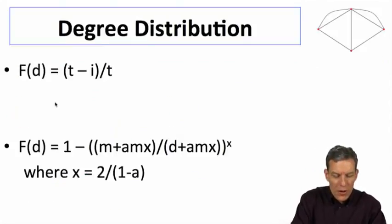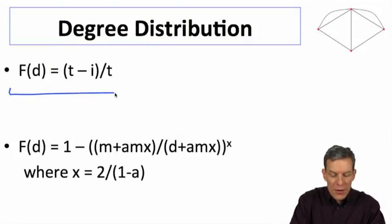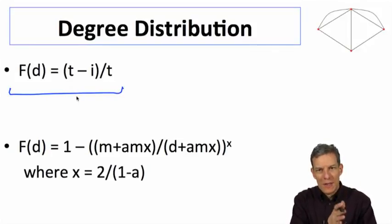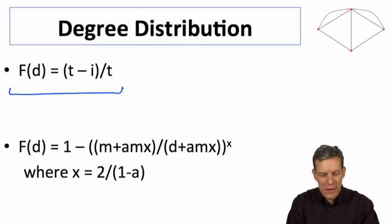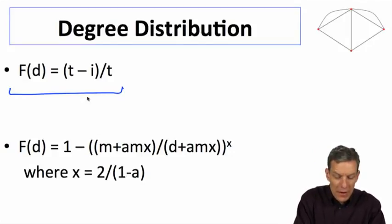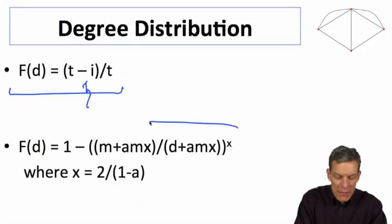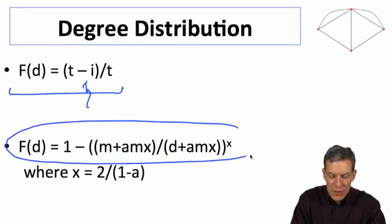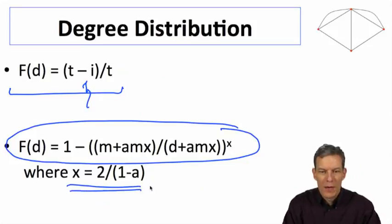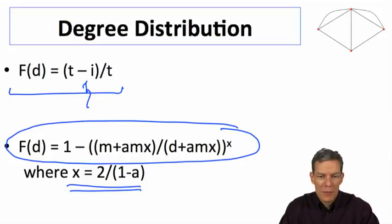Therefore, remember the f of d is going to be the fraction of nodes that were born after the ones that have this critical i that has exactly that d. If you substitute in from the i here, what do we get when we substitute that in? We get f of d equals this equation where x equals 2 over 1 minus a.